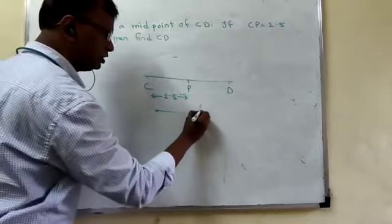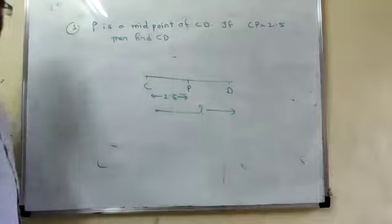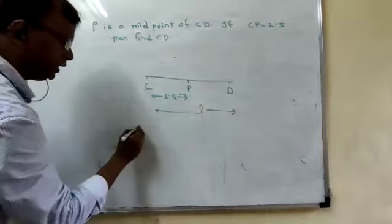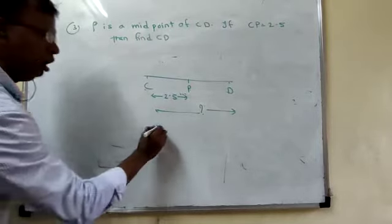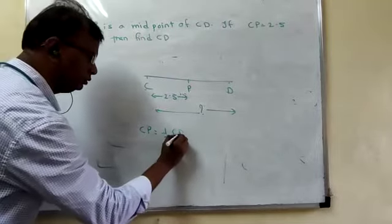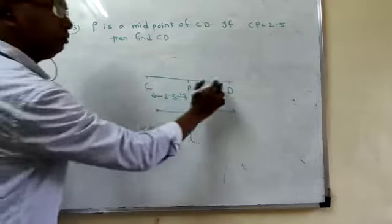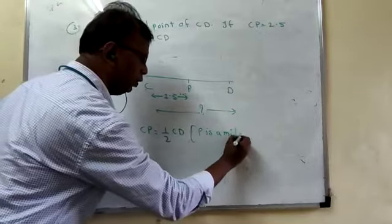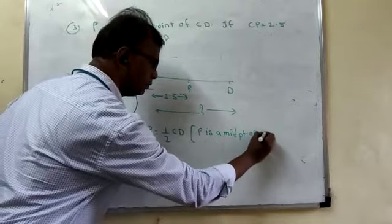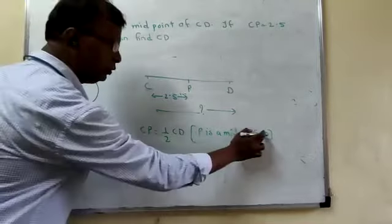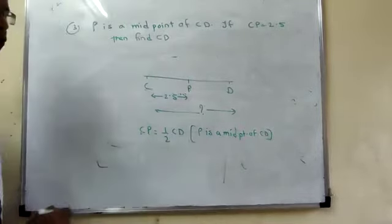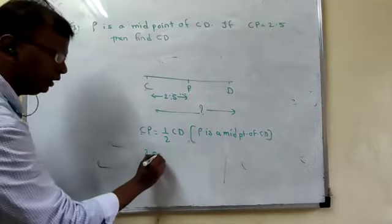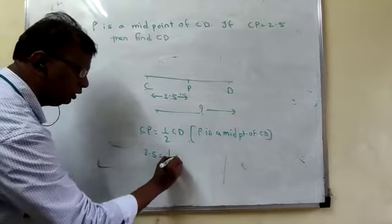And we have to find out CD. What I said that P is a midpoint of CD. First method. I write CP is half of CD. CP is half of CD. The reason, P is a midpoint of CD. Which value is given for you? CP is given. How much? 2.5.